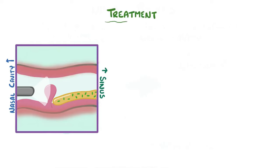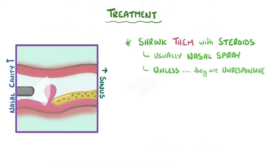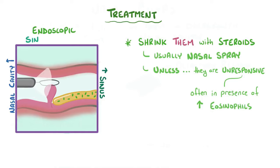The treatment for polyps is to shrink them using steroids, usually in the form of a nasal spray, which act to decrease the inflammation and swelling from the polyp. But some polyps are unresponsive to steroids — this tends to happen when there are high levels of eosinophils, a specialized type of immune cell. In these cases, endoscopic sinus surgery might be needed to cut them out.